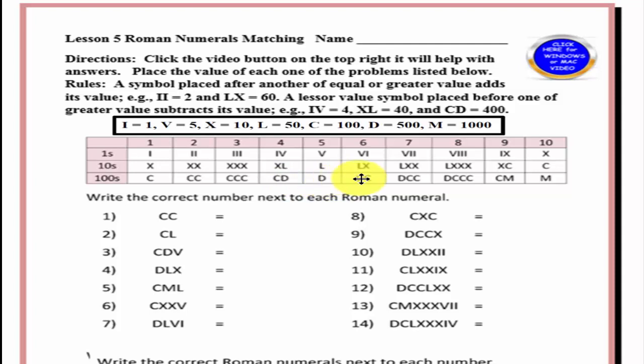Right? And then we have dc, dcc, d and three c's, c and an m. Now the m is 1000, so the lesser value before it makes it 900. And then we have 1000.